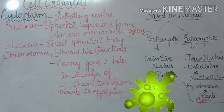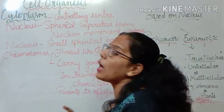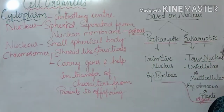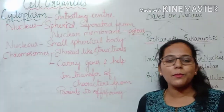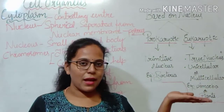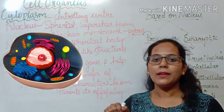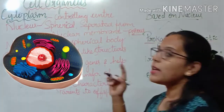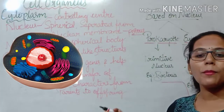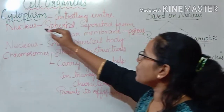Now let us get into the main part of this session — the cell organelles. Before getting into cell organelles, we should know where they are present. They are present in the cytoplasm, which is inside the cell. The cell contains a liquid-like material called cytoplasm, and inside the cytoplasm there are many cell organelles embedded. Let us get into the first one — the nucleus.